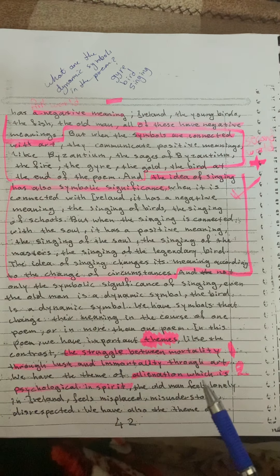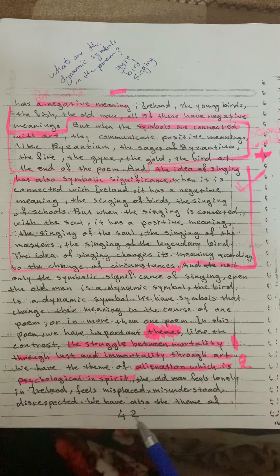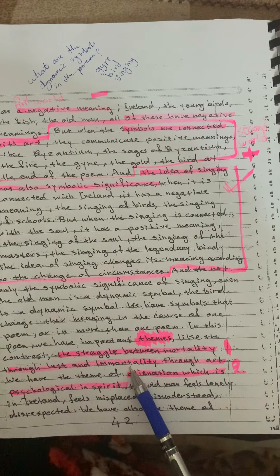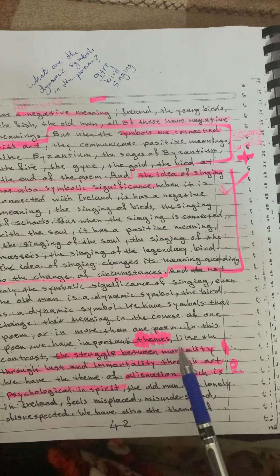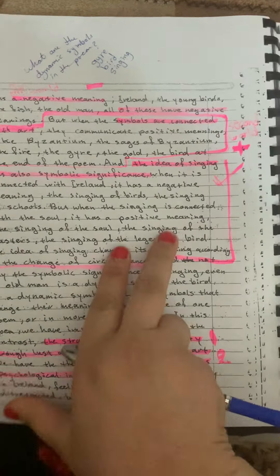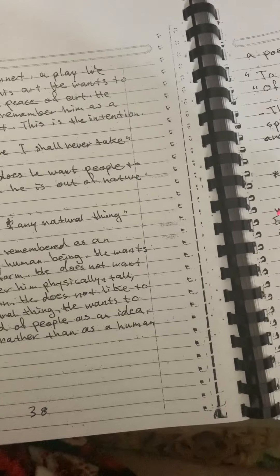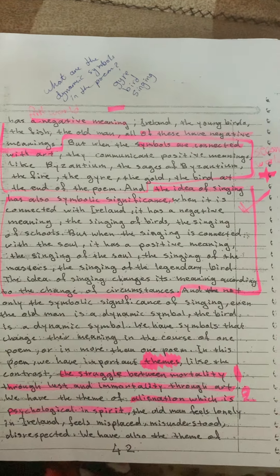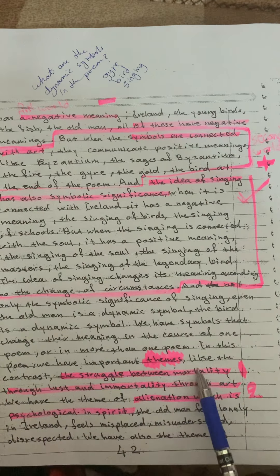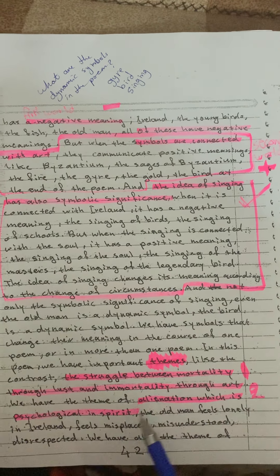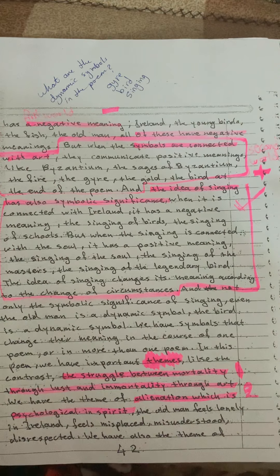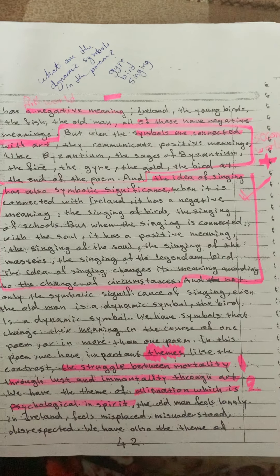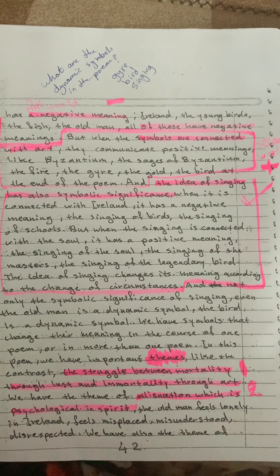Now we shift to the themes. The poem has four major themes. Number one is the struggle between mortality and immorality — mortality through lust and immorality through art. This is the same contrast mentioned earlier.